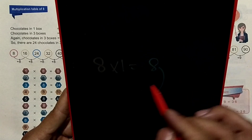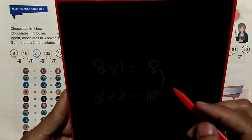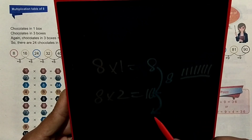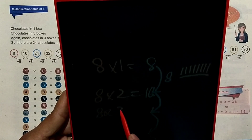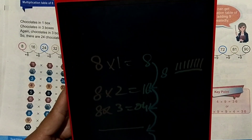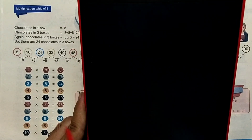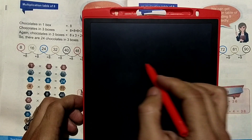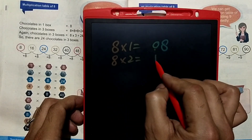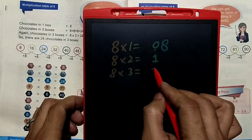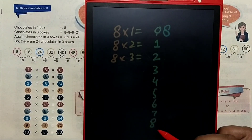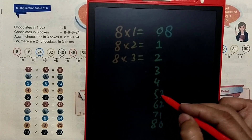8×2 is equal to 16. 8×3 is equal to 24. There's a pattern — let me show you the 9 table as well. Using the formula: 8×1=8, then delta 0, 8×2 — the 0, the 1. 8×3 — the 1, the 2. You need 3, 4, 5, 6, 7, 8.